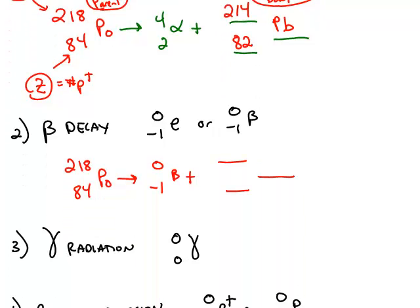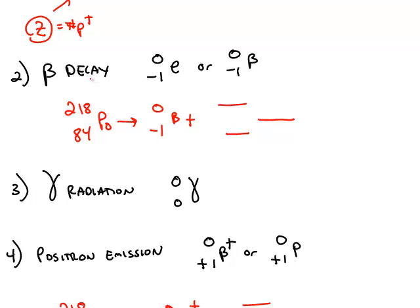Another type is emitting a beta particle. A beta particle has zero mass but a charge of negative 1, which means a beta particle is just an electron. So here's two ways of showing a beta particle.